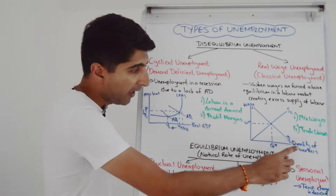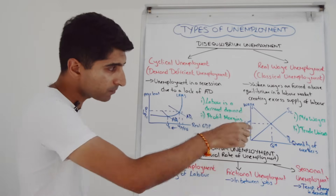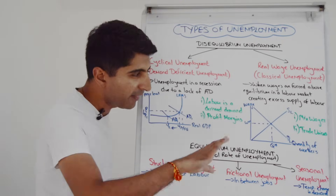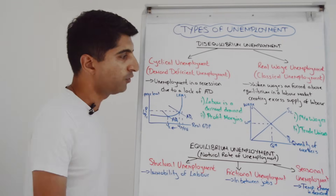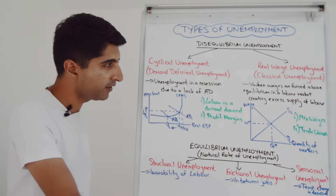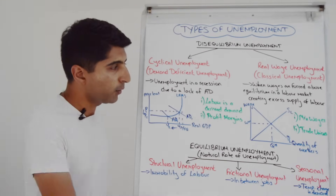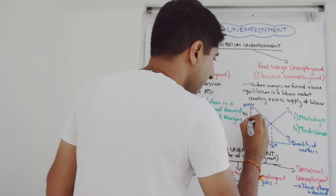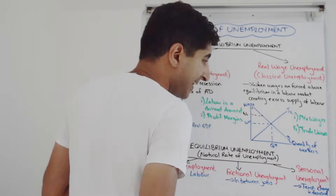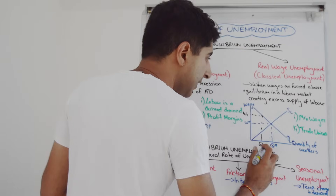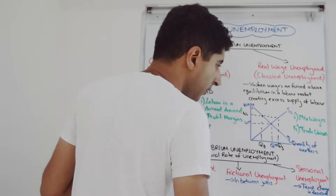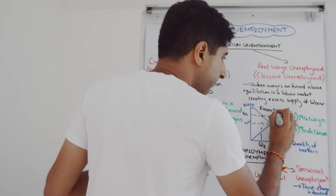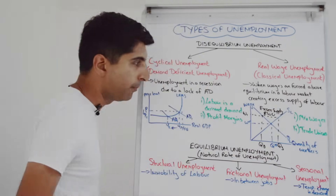We have the labour market here: wage on the y-axis and quantity of workers or employment on the x-axis. We have a normal downward-sloping demand curve for labour and a normal upward-sloping supply curve of labour. The demand for labour comes from firms looking to employ workers; the supply of labour comes from individuals supplying themselves for work. Where the two curves meet, you have equilibrium — call that W* and Q*. But if wages are forced above equilibrium to W1, firms are less willing and able to employ, so you see a contraction of labour demand to QD. Workers are very willing and able to work at high wages, so you see an expansion of labour supply to QS. The difference between QS and QD is your excess supply of labour — that is your real wage unemployment.